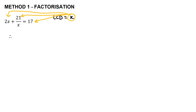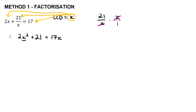Multiplying through: 2x times x gives 2x squared; 21 over x times x cancels to give plus 21; and 17 times x gives 17x. Now it has all the pieces of a quadratic equation. Getting it into standard form: 2x squared minus 17x plus 21 equals 0. Remember, you also get a mark for writing it in standard form in your exam.